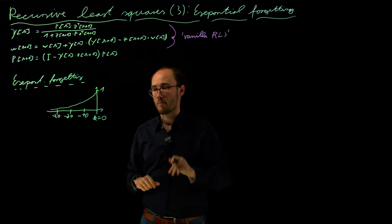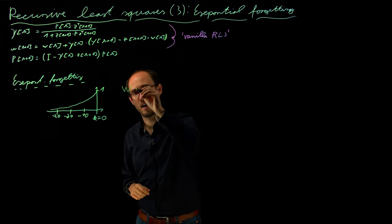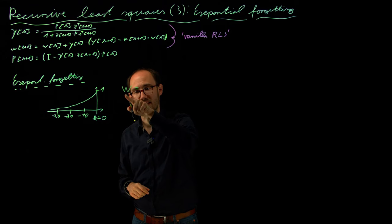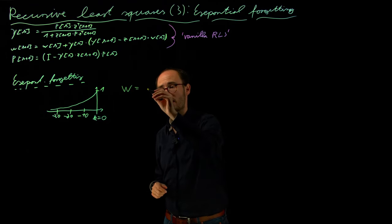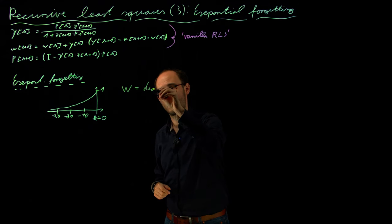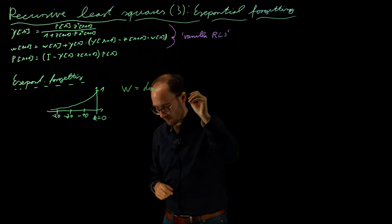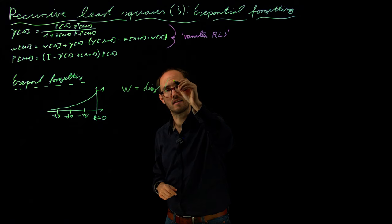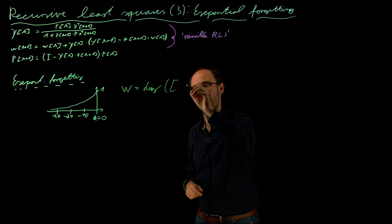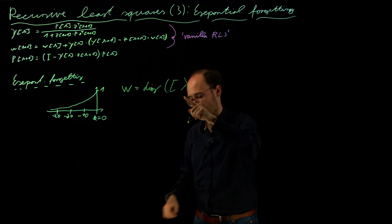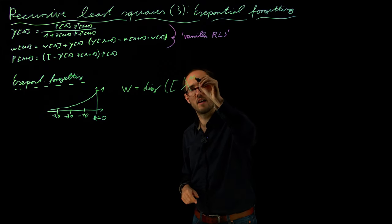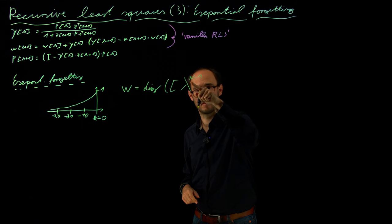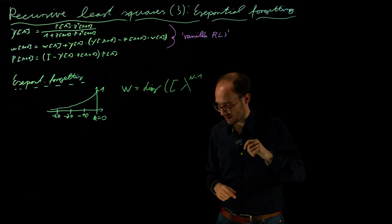This can be formally expressed as our weighting matrix W, which you already know from the weighted least squares as a diagonal matrix with the weighting elements lambda. So lambda is our forgetting factor, which I will introduce shortly, n minus 1 for the up to capital N previous data points,